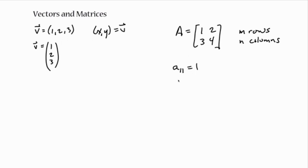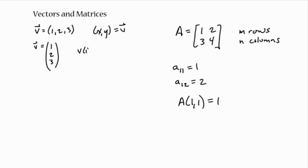So A11 is going to be equal to one — that's the first row, first column. The A12 element — row one, column two — is two, and so forth. With vectors, same sort of thing: you could say the first element of the vector V is one, or V subscript one is one, referring to that first element.